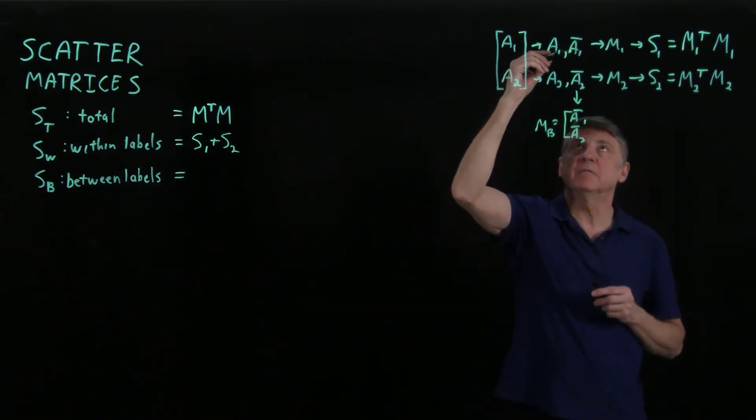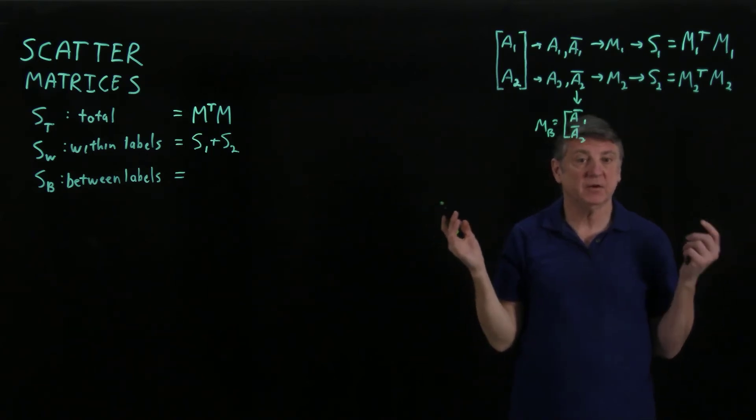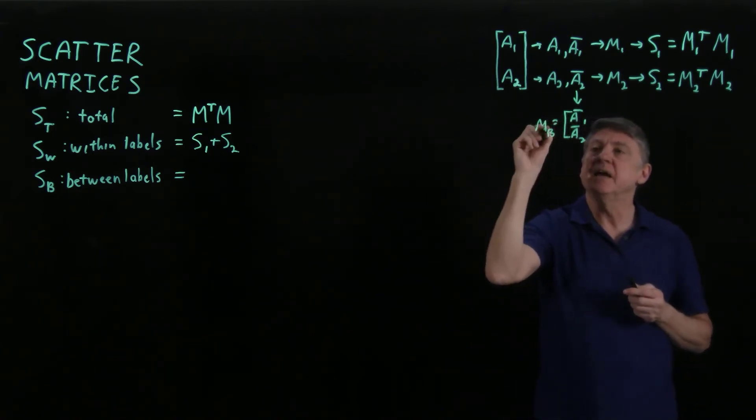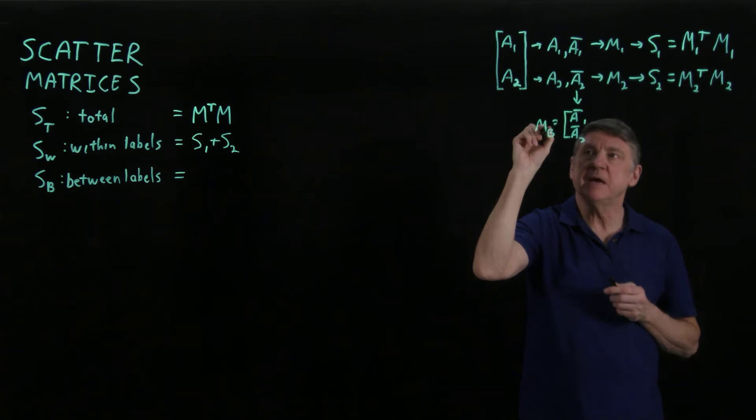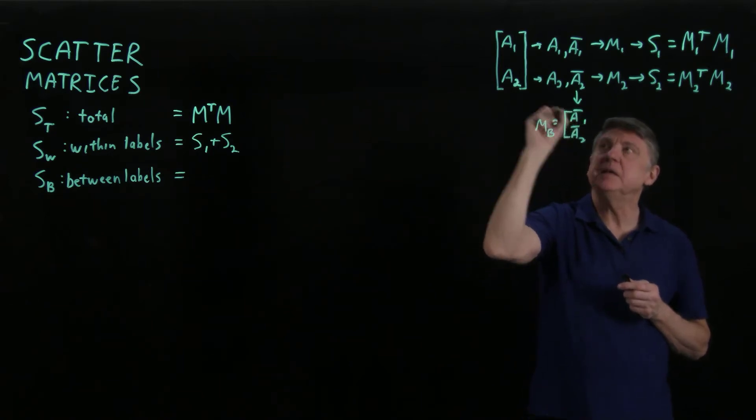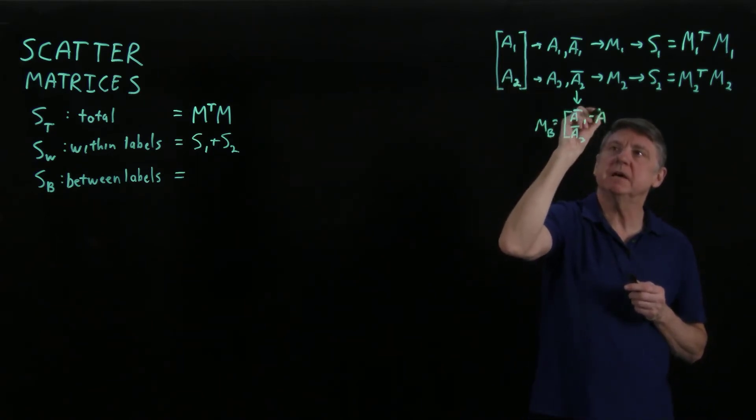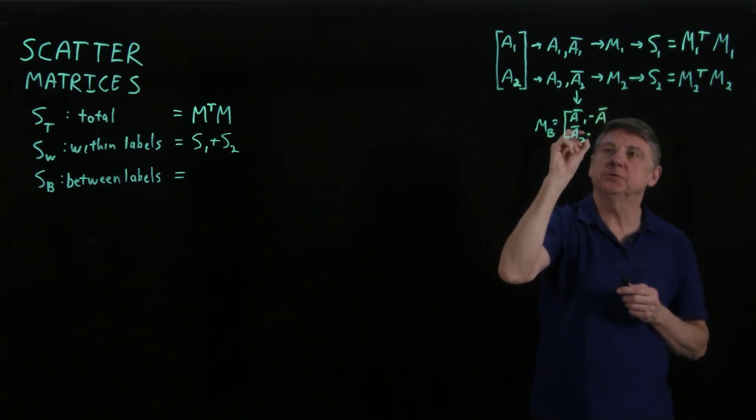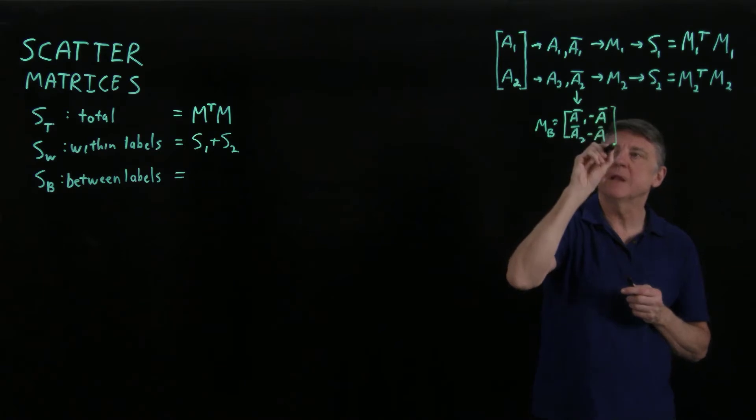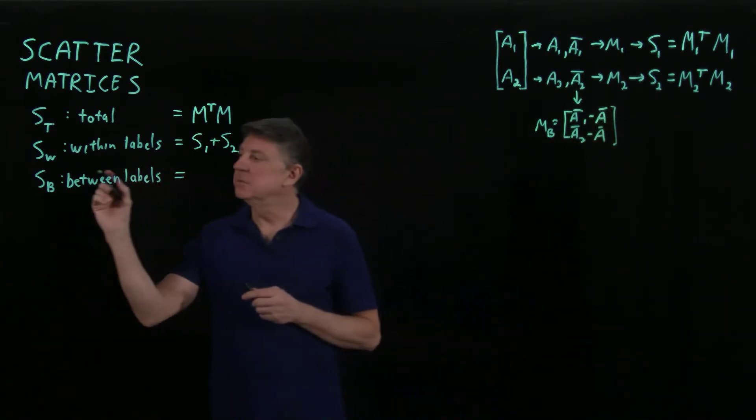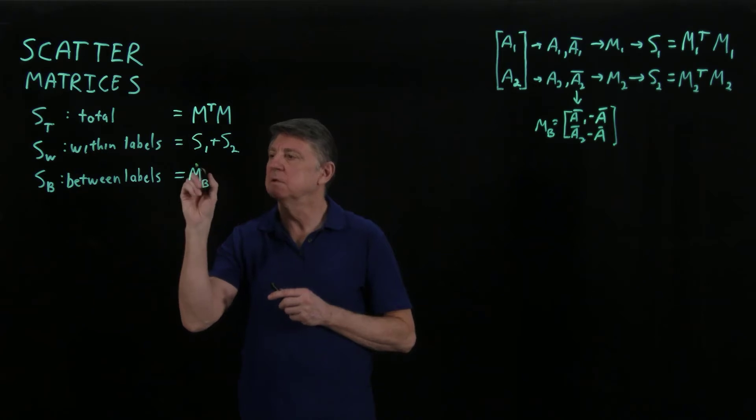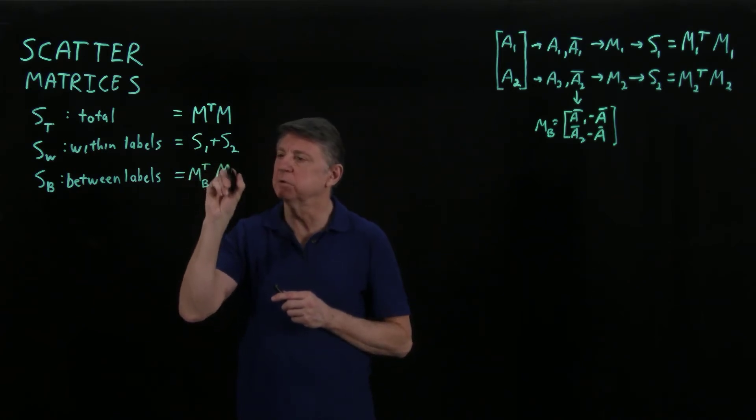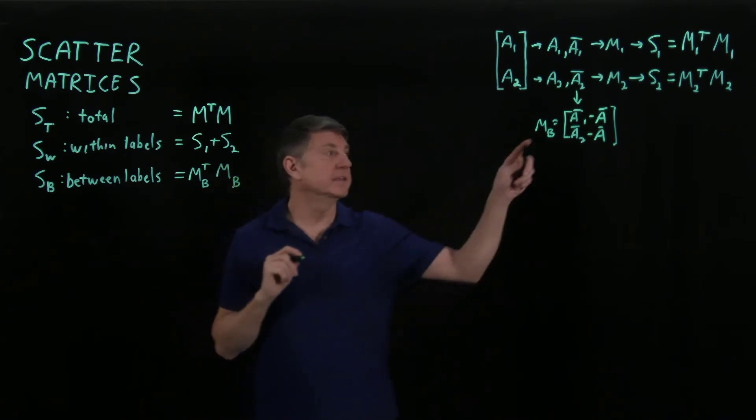So what's the sum of this mean and this mean? Well, that's the mean of the whole data matrix. So this between label mean matrix is the mean of label A1 minus the mean of all the data, the mean of label 2 minus the mean of all the data. And now we can formulate the between label scatter matrix as we take that zero mean between label data, transpose it, and multiply it by this matrix.